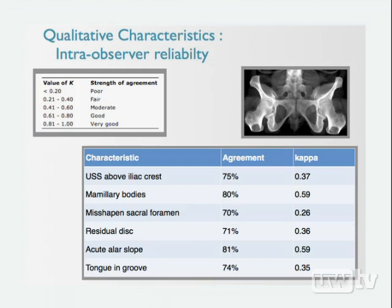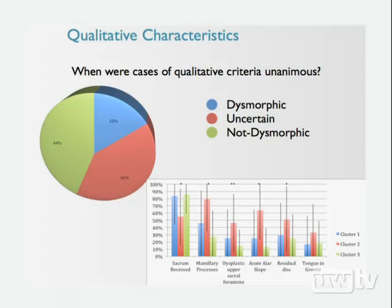We assessed intra-observer reliability of qualitative criteria previously introduced, examining agreement between reviewers including the author and Mike Gardner. Overall agreement was 70 to 80%. Kappa statistics, which account for chance agreement in assessing inter-rater reliability, showed mostly fair to moderate agreement — not as good as desired. However, close to 60% of cases were unanimously classified as either dysmorphic or non-dysmorphic, with approximately 40% being uncertain.